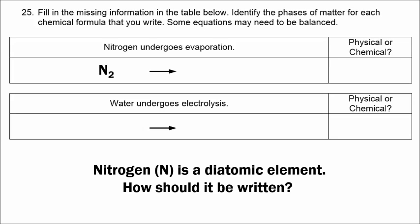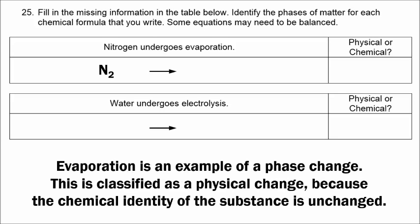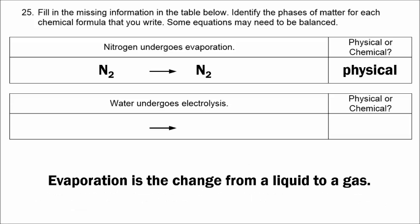Since the word evaporation is referring to a phase change, that's a physical change because the chemical identity of the substance is unchanged. We would still have the same formula, N2, on the right. Evaporation is the change from a liquid to a gas, so we put in the phases of matter — liquid on the left and gas on the right.